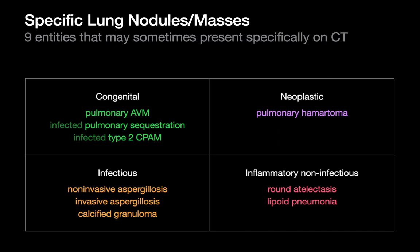So there you have it — a review of the nine entities that we need to be responsible for that can sometimes present specifically on a CT scan as a specific nodule or specific mass. These are going to be the situations where we can bypass the algorithmic workup that we usually rely on for nonspecific nodules and masses, and you can give a diagnosis now as opposed to after follow-up or after another test.